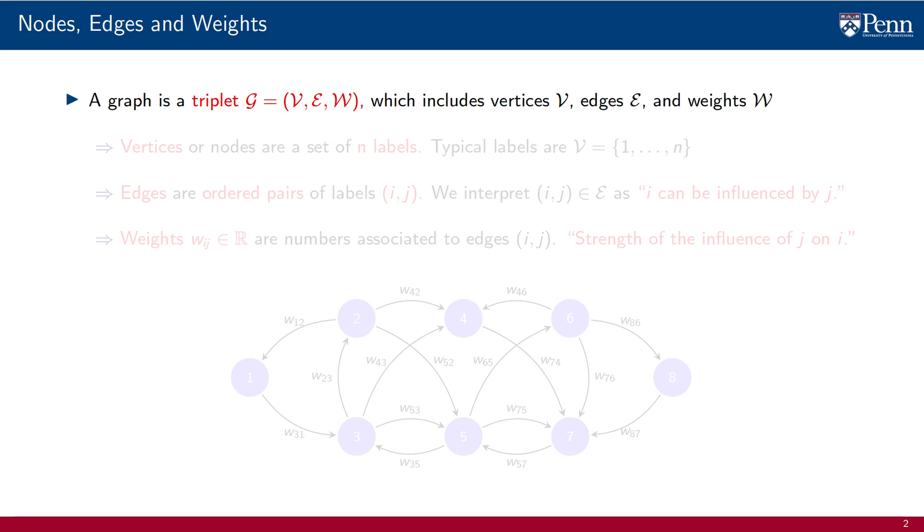A graph G is a triplet, made up of a set of vertices V, a set of edges E, and a set of weights W. Vertices, or nodes, are simply a set of n labels, where n represents the total number of nodes in the graph. Typically, labels are the natural numbers from 1 through n, like in this figure, where nodes are labeled 1 through 8.